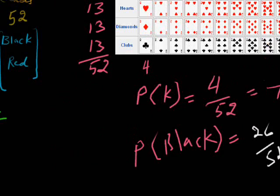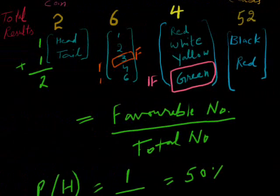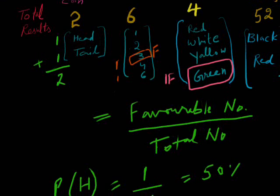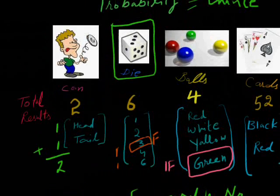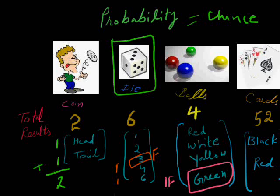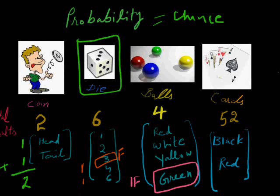So like this, we can calculate probability. Probability will always be the favorable number of events divided by the total number of events. You can use it in other fields. These are the common fields: coin, die, ball, cards. You can use it in other fields, in your business, in your decision making. Thank you very much.